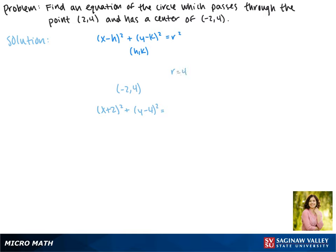So then r is 4, but we need to put r² into our equation. So this all equals 16. So this is the equation of our circle.